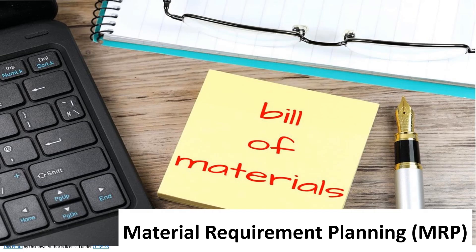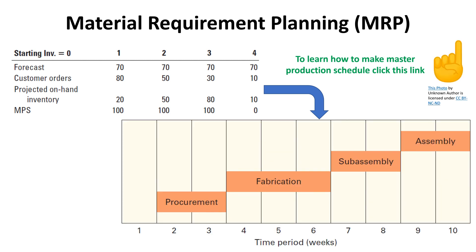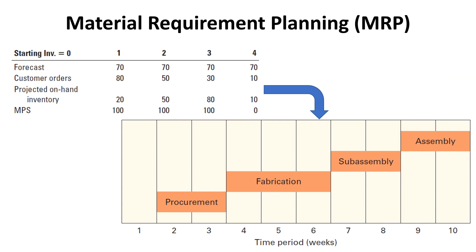Let us start with Material Requirement Planning. Material Requirement Planning, or MRP hereafter, is a process that translates the finished product requirements of the master schedule into time-phased requirements for subassemblies, component parts, and raw materials, working backward from the due date using lead times and other information to determine when and how much to order.